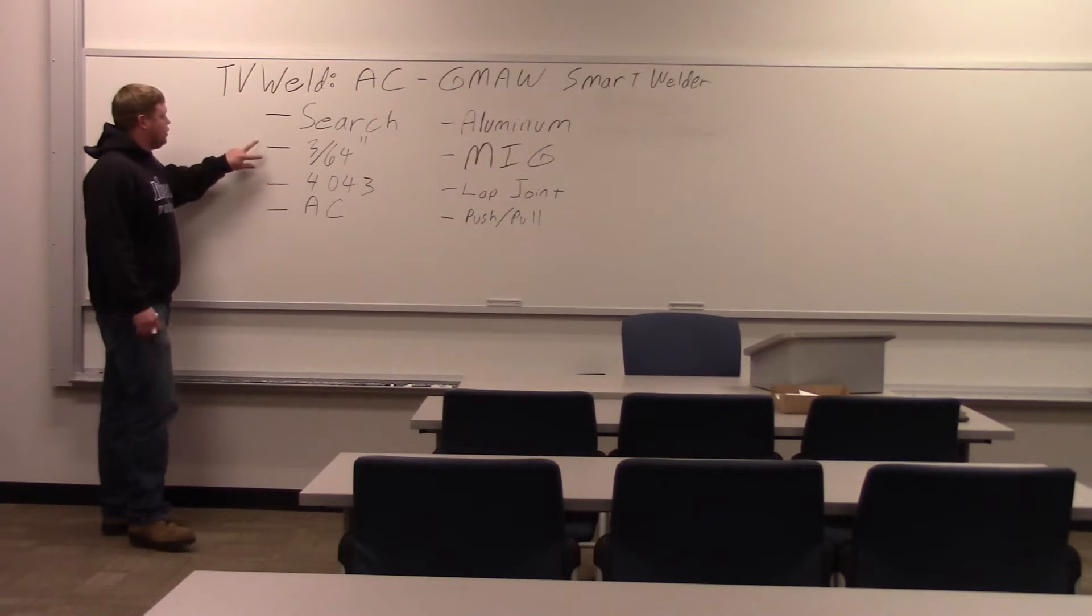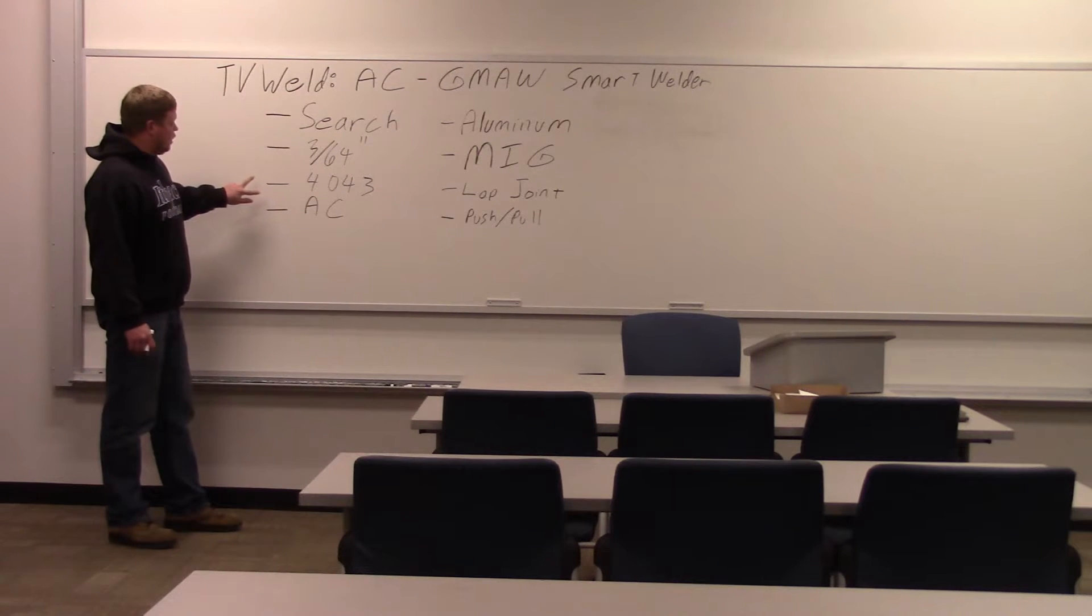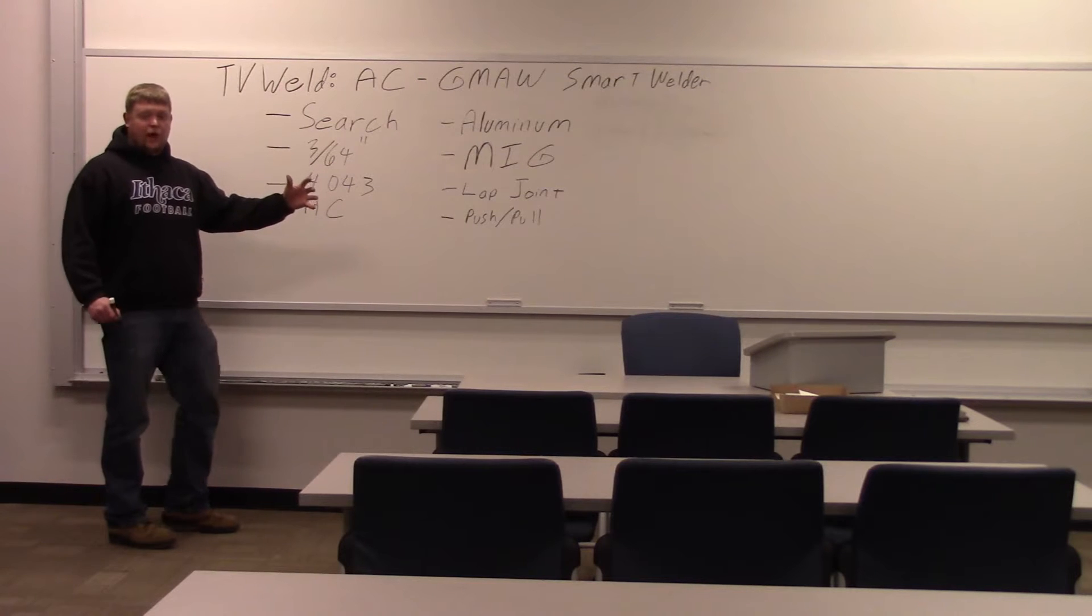Then it asks you the wire diameter, 3/64th inch, your wire composition, which is 4043. Then it asks you if you want to have a constant voltage or what we're doing is AC. So we switch to AC.